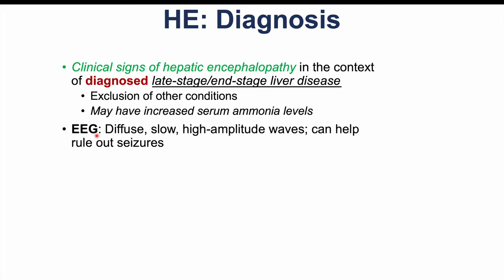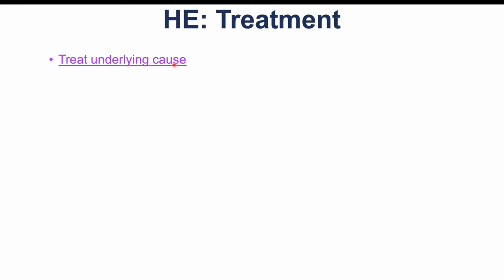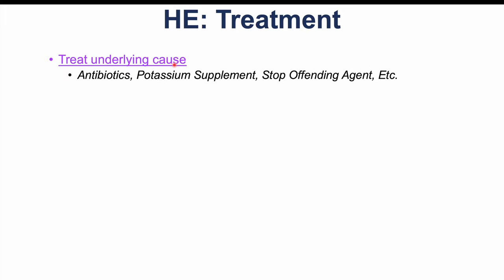An EEG may be used in some cases; patients with hepatic encephalopathy would show diffuse, slow, and high-amplitude waves. Importantly, the EEG can help rule out seizures. Once diagnosed, it's important to identify and treat the underlying cause or trigger. For example, antibiotics for bacterial peritonitis, potassium supplementation for hypokalemia, or stopping an offending medication — whatever trigger has been identified should be stopped or treated.